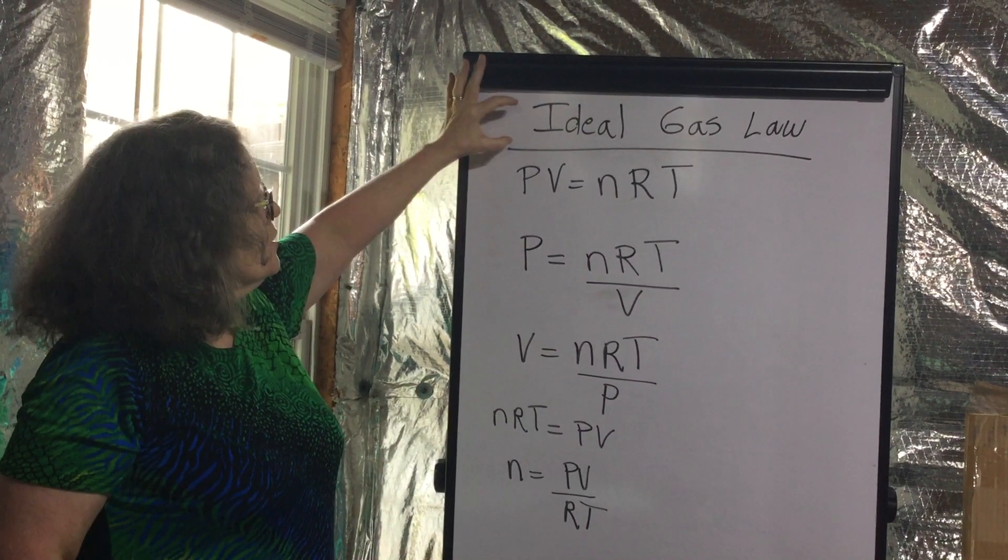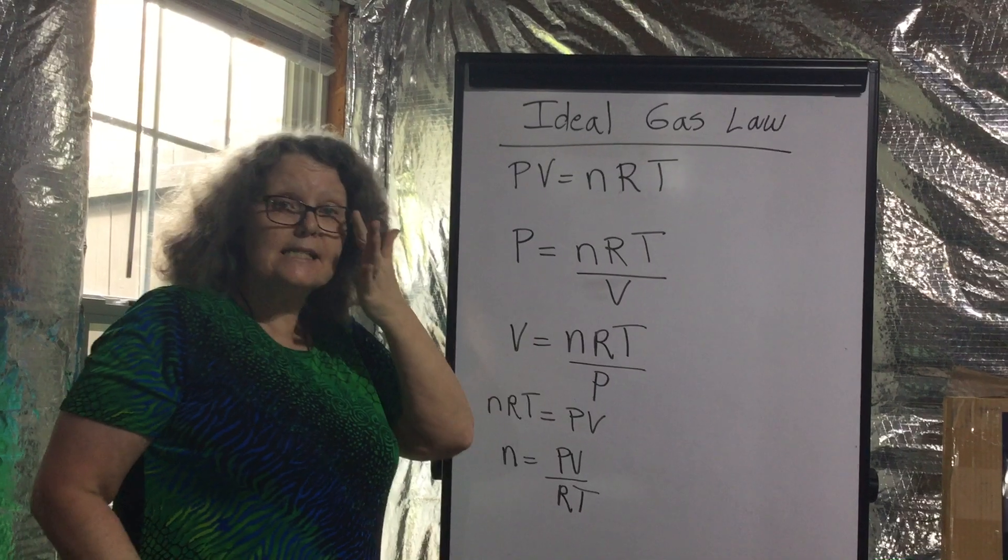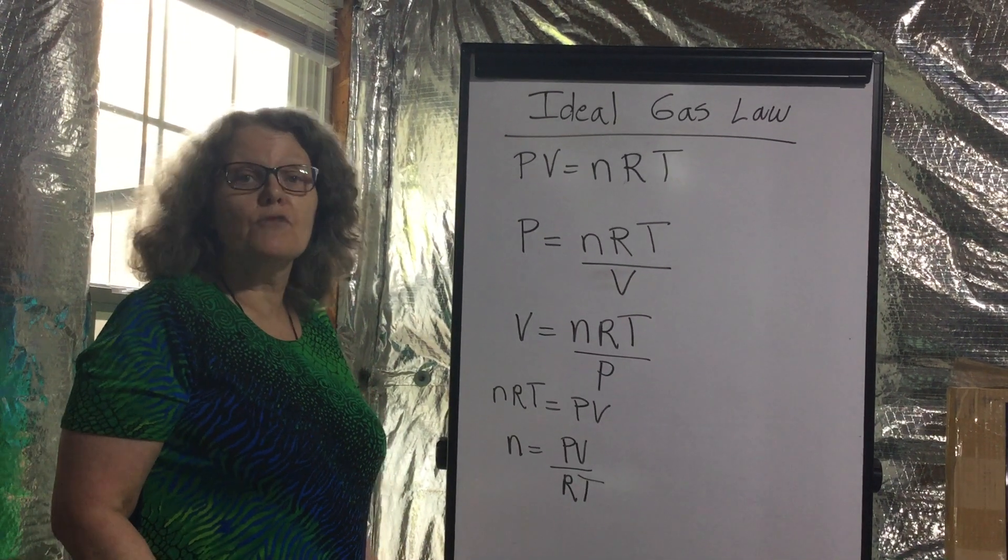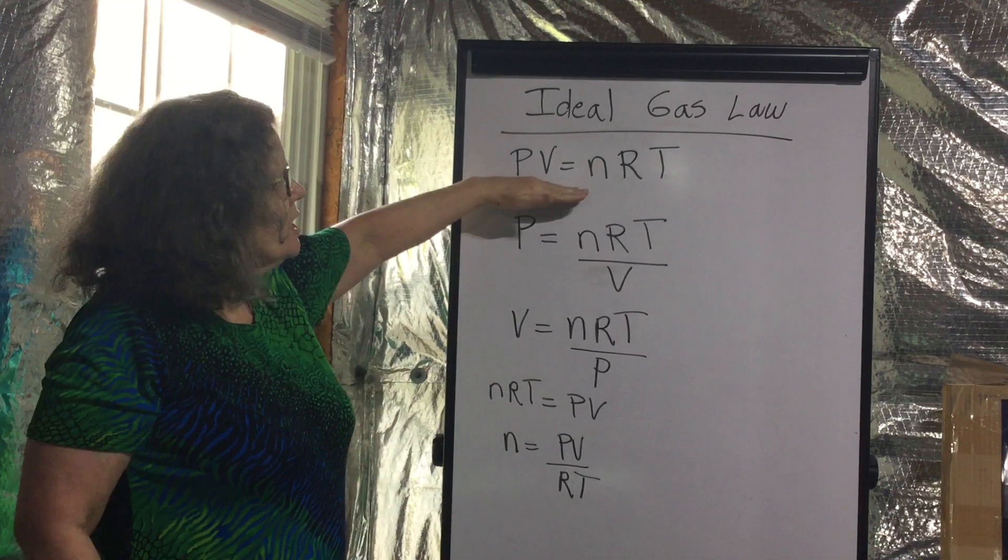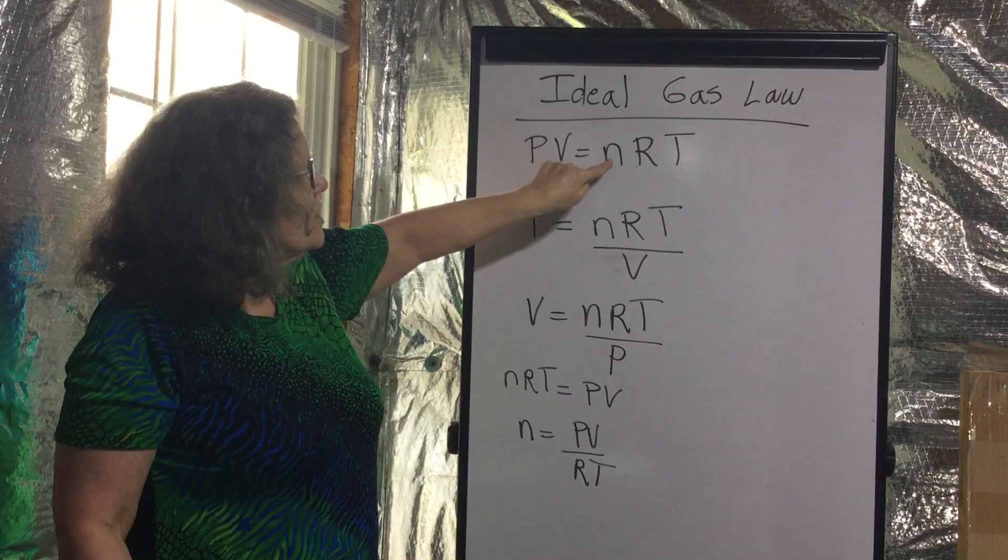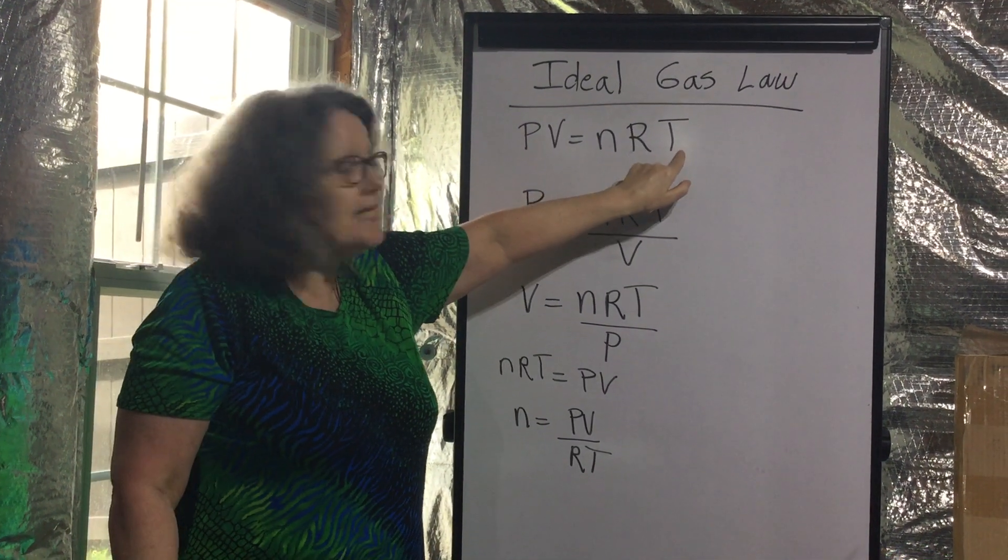Let's start with just the ideal gas law. Just like we did with the combined gas law, I want you to take a few minutes isolating unknown variables. Here's our equation: PV equals NRT. Pressure times volume equals the number of moles times R, the gas constant, times the temperature.